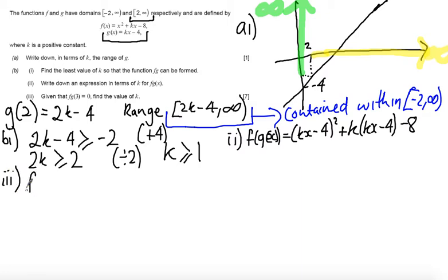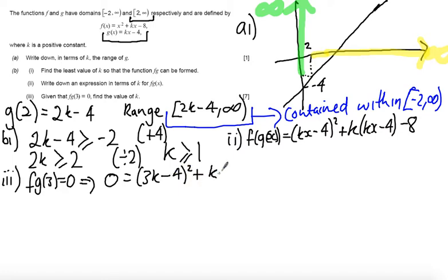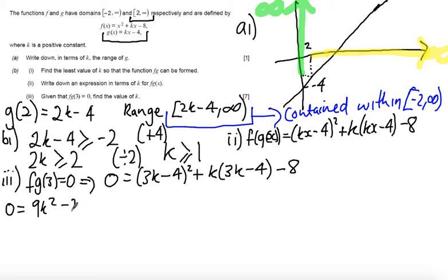Part 3 tells me that fg(3) equals 0. So I'm going to substitute 3 into my function to get 0 equals (3k minus 4) squared plus k times (3k minus 4) minus 8.